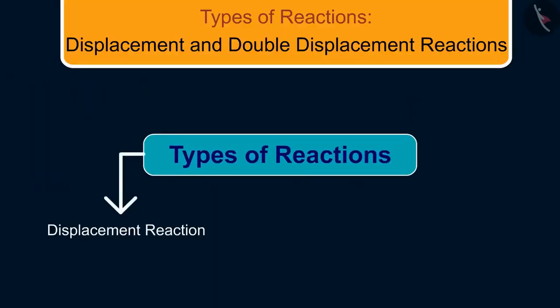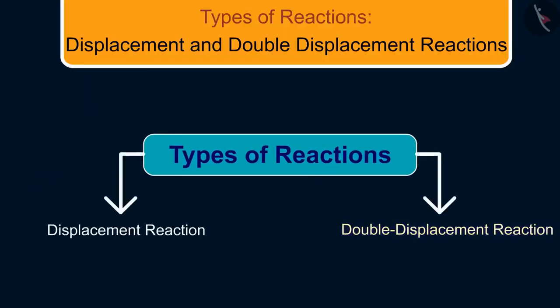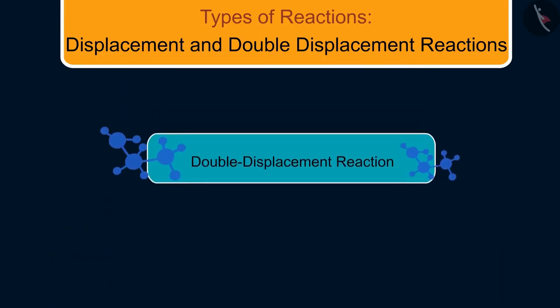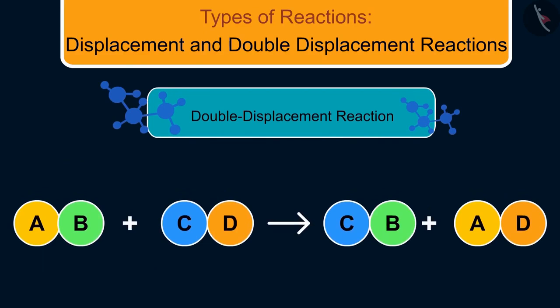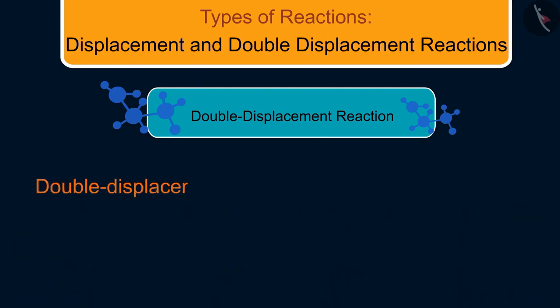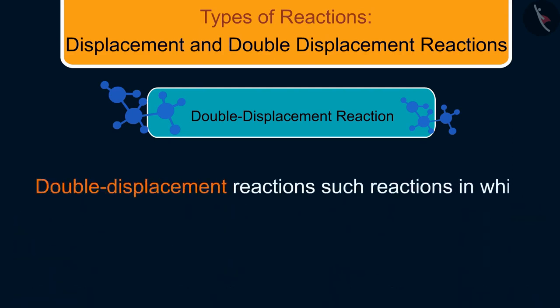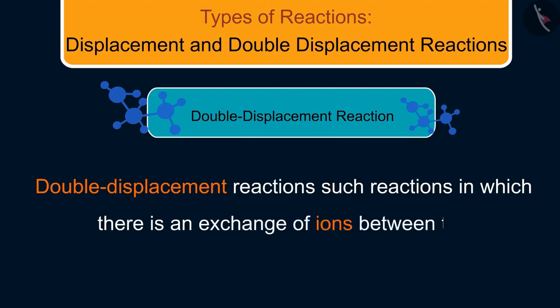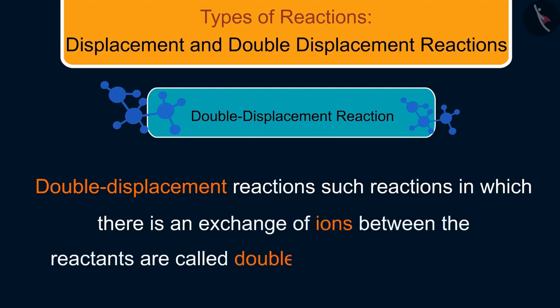We will now discuss another type of reaction: double displacement reactions. It is similar to displacement reactions, but the name itself suggests that there is a double displacement — that is, there is substitution of two atoms by other two atoms. In reality, such reactions involve an exchange of ions between the reactants and are called double displacement reactions.